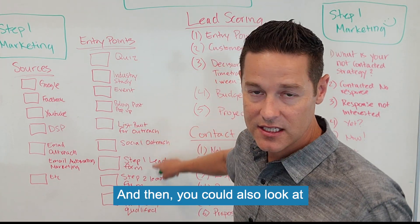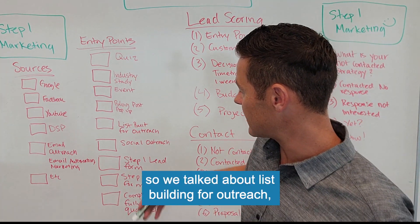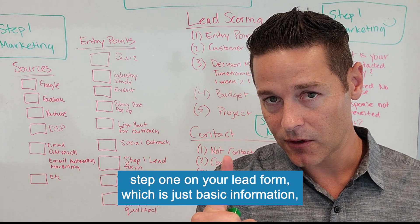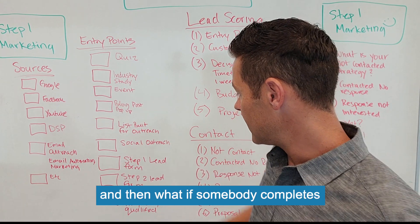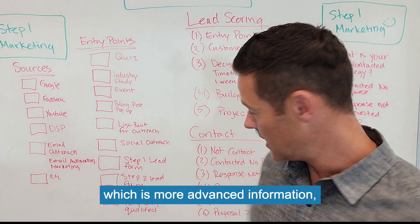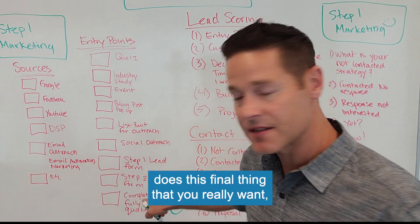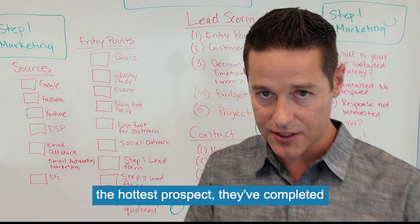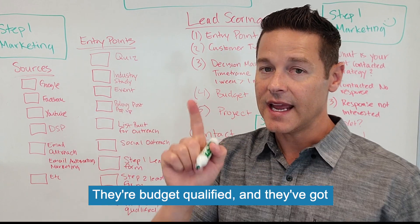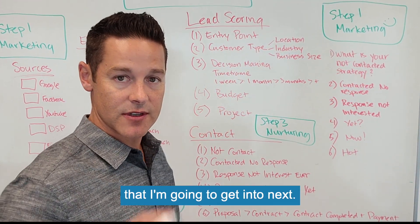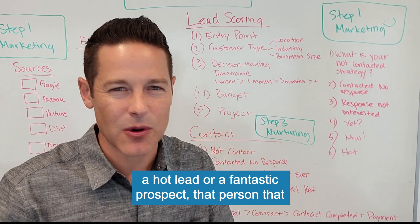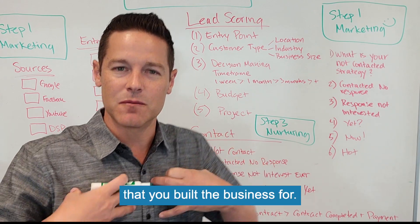We also talked about list building for outreach and social outreach. But what if somebody completes step one on your lead form — just basic information — versus step two with more advanced information, versus completing all steps, being budget qualified, and having the other key characteristics? That final person is what we'd consider a hot lead — a fantastic prospect, that person you really, really want to work with, that you've built the business for.